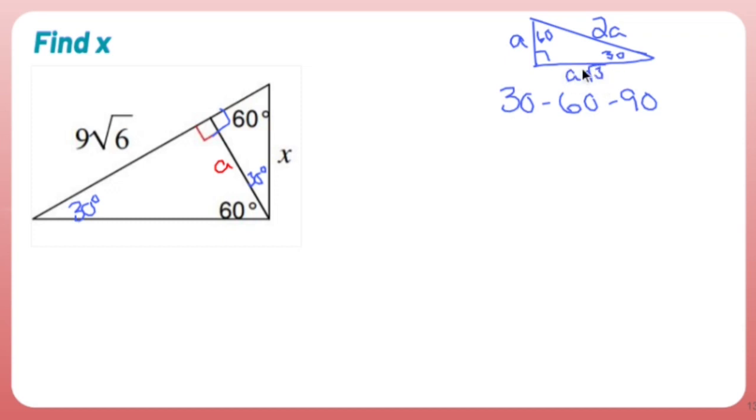So again, I called A this leg right here. You are now 9 root 6 divided by root 3. 6 over 3 is doable. So what I'll do is I'll just move the 9 off to the side. There's a rule that says if you're dividing square roots, just make it one big square root and divide on the inside.